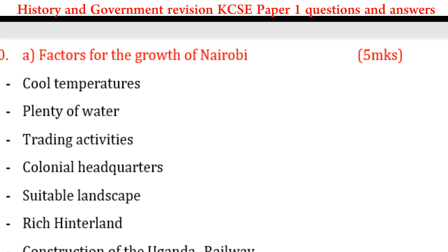What factors made Nairobi grow to become a town and city? Number one: cool temperatures — the area of Nairobi has cool temperatures. Number two: plenty of water, especially from the Nairobi River, though that river is very dirty today. Number three: trading activities happening there between the Maasai, Agikuyu, Akamba, and Indians.